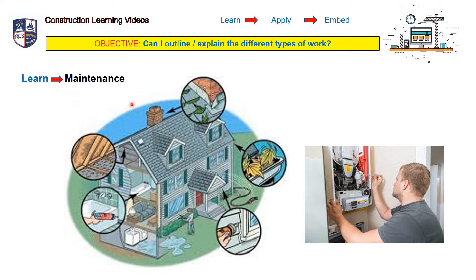Next, maintenance. Any type of building needs looking after in the same way that we should be looking after ourselves. Buildings need looking after. Maintenance is the process of keeping something in good condition. For example, annual maintenance to a central heating boiler, like we have in this picture here, or it could be as simple as oiling door hinges. Looking after buildings is a massively important part of extending the building's lifetime.